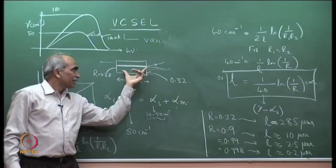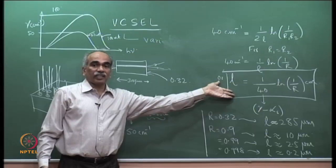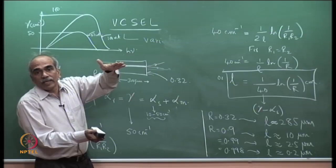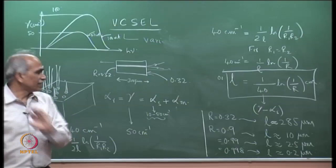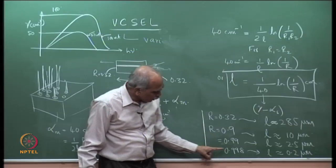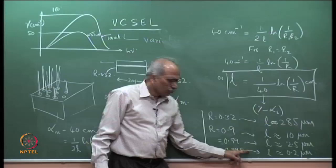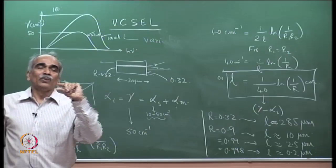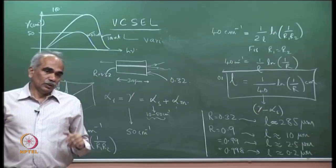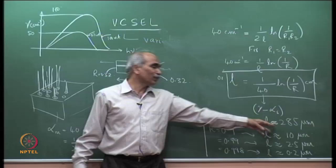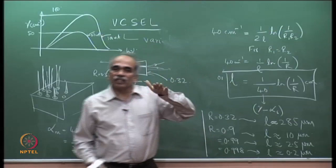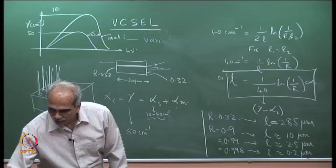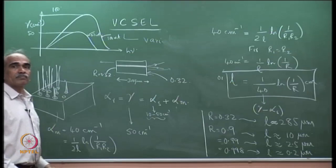In a normal laser, because R was 0.32, you require at least 300 microns — that much length of the gain medium to compensate for the resonator losses. With 32% reflectivity, 68% of light is lost from the resonator. In the vertical cavity structure, since it is not possible to have a thick active layer by epitaxy, the only way is to increase the reflectivity. In VCSELs, people normally use reflectivity in the range of 0.998, allowing an active medium of only 0.2 micrometer thickness.